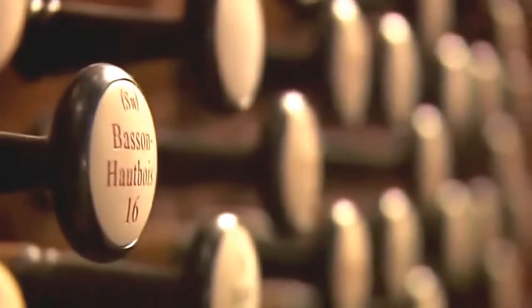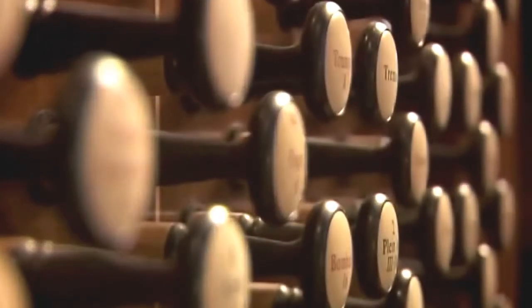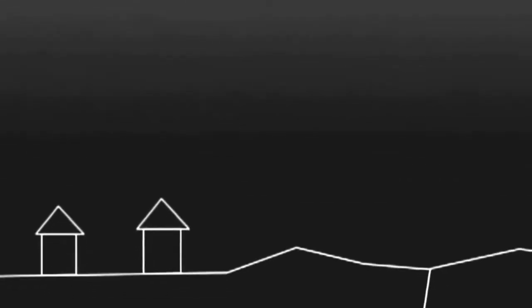Our sun vibrates like a giant pipe organ. But instead of air producing the notes, churning gases deep inside sends sound waves rippling through its interior. Because a sound wave changes as it moves through different material, we can look at the different frequencies and determine what's happening inside the sun.